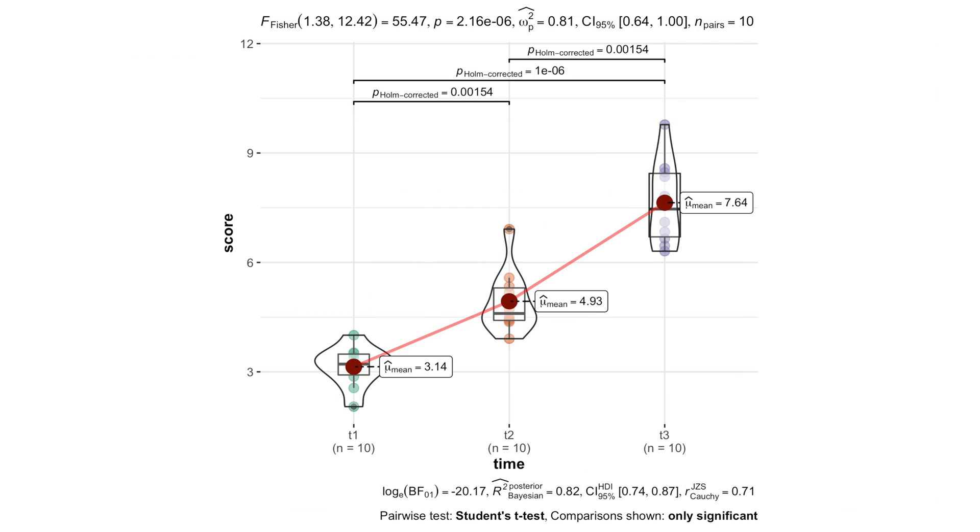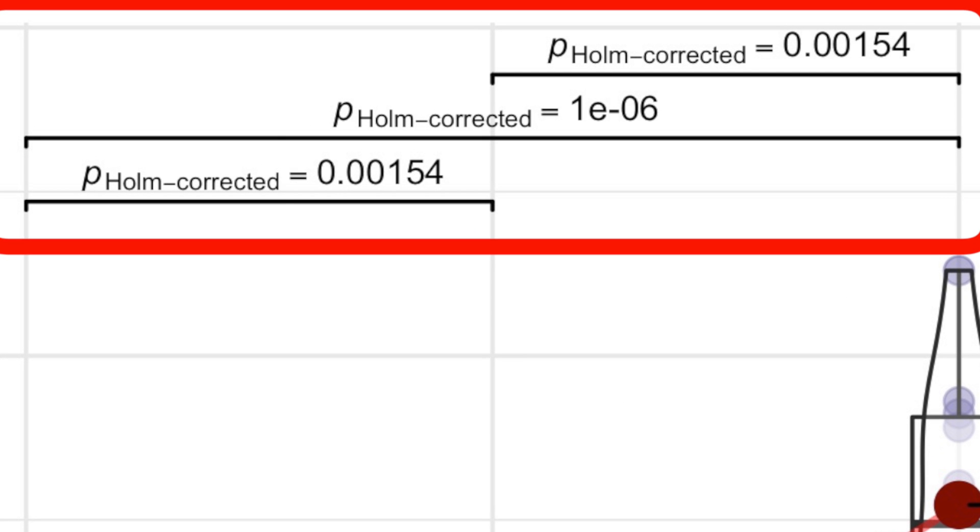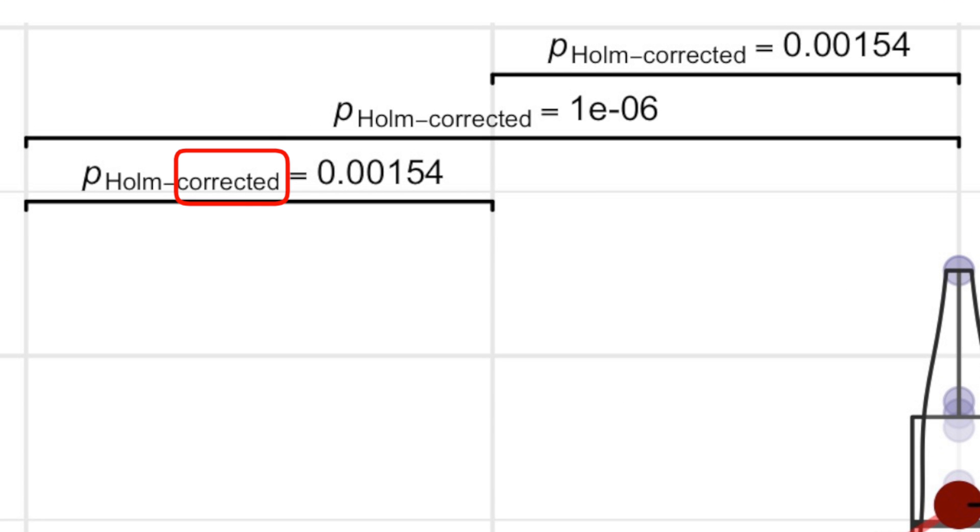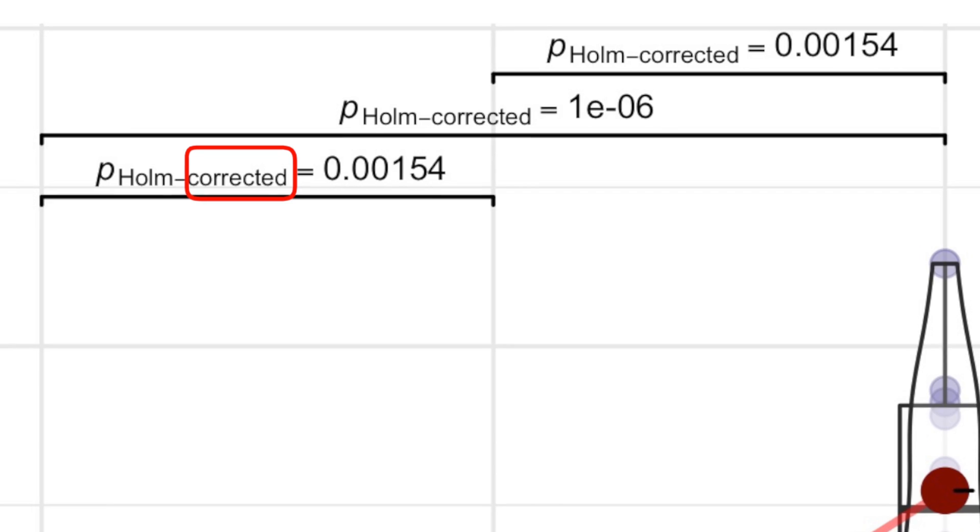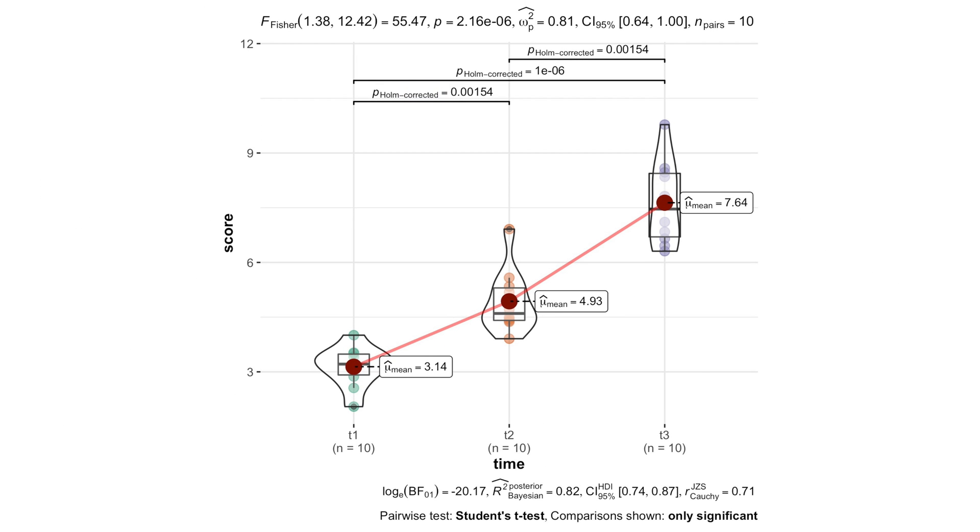Anyway, ggwithinstats automatically knows that we need paired t-tests for repeated measures ANOVA, automatically conducts those tests and displays p-values, and even corrects p-values for multiple comparisons without any additional code. How cool is that?